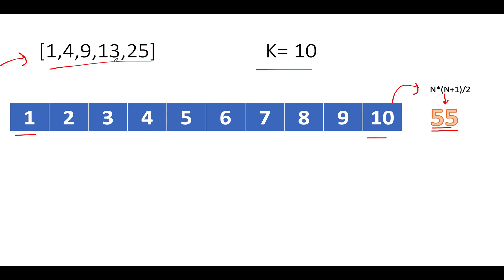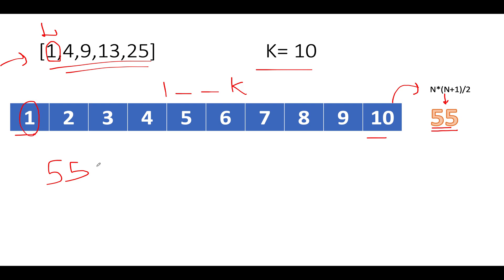However, some elements may already be present in the input array, so we handle those separately. We iterate and check whether the current element is within the range of 1 to k. The first element is 1, which is in range, so we subtract 1 from the total sum — it updates to 54 — and increment a vacancy count to 1. Next, 4 is also in range, so subtract 4; sum becomes 50 and vacancy count becomes 2.